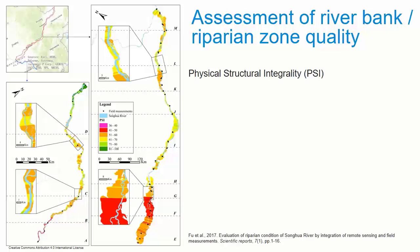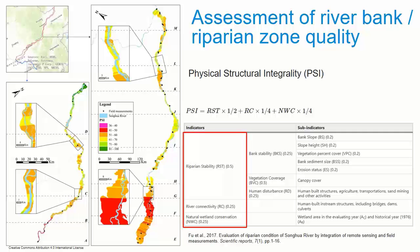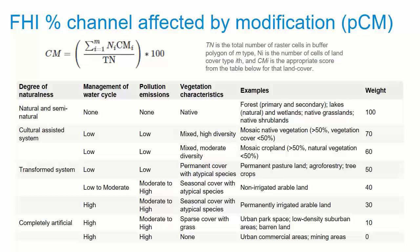If assessment of larger riparian areas is the objective, methods also exist to base the assessment on remotely sensed data complemented by field data collected at select sites. The physical structural integrality approach is one such method. It combines weighted indicators of riparian stability, river connectivity, and natural wetland conservation, and the resulting score falls on a scale of 0 to 100. And within the Freshwater Health Index Manual, you'll find a proposal to apply the same approach suggested for the wider river basin in the more focused riparian area. This approach will be most feasible when field work is not possible and results must be derived from existing spatial data.